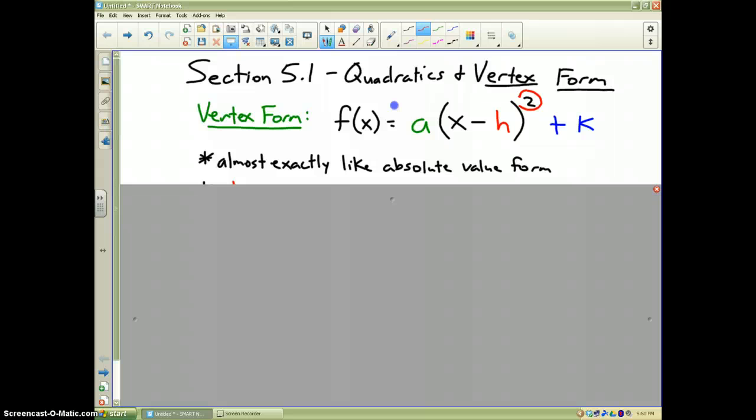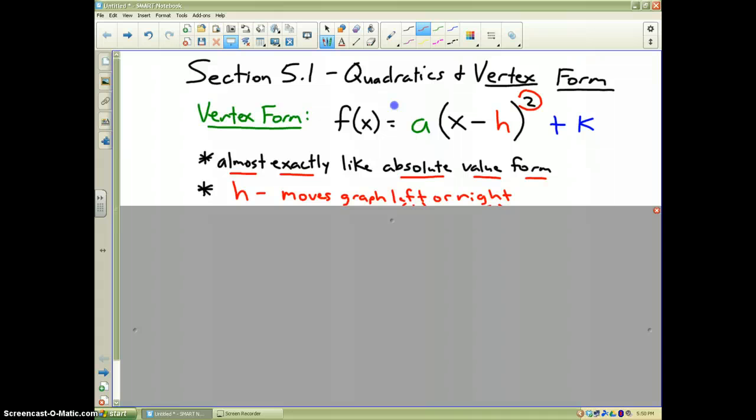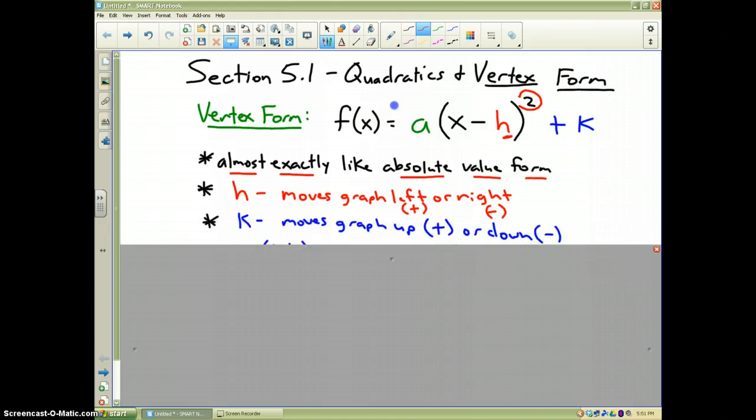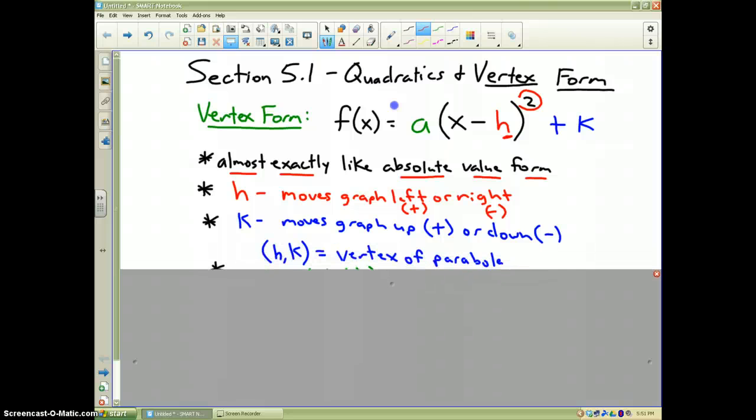A few notes about vertex form. Number one, it is almost exactly like the absolute value form that you learned in section 2.9. The h value, and again, it's color-coded. So if you notice, h is in red. h moves the graph left or right. If it's positive, it goes left, and if it's negative, it goes to the right. The k value moves the graph up if it's positive or down if it's negative, and h is the vertex of our parabola, just like it was for the absolute value function.